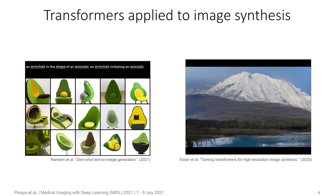Due to its promising results on natural language processing, other research areas have recently explored their use. In particular, the application of transformers on computer vision has shown incredible results in several tasks, like image classification, object detection, and their application as generative models for image synthesis. The performance of transformers as generative models and their power to model long-range relationships make them a great candidate for one of the most challenging tasks in medical imaging: anomaly detection.